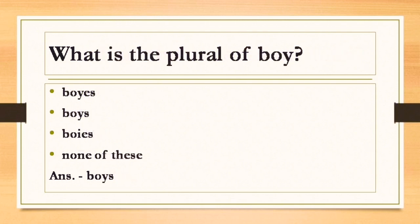Next question is what is the plural of boy? We have to see all the options. The first option is B-O-Y-E-S. Is it correct? No. B-O-Y-S is correct. Another option is B-O-I-E-S, and the last one is none of these. So only one option is correct, that is option number B. Option number C is not correct because Y has been changed into I-E-S, and you can see that Y is followed by a vowel.